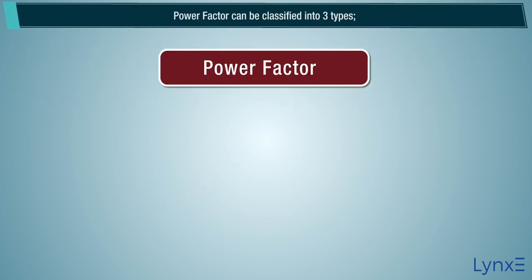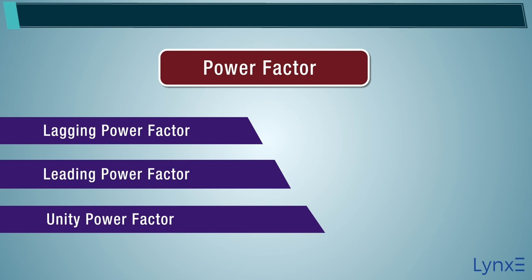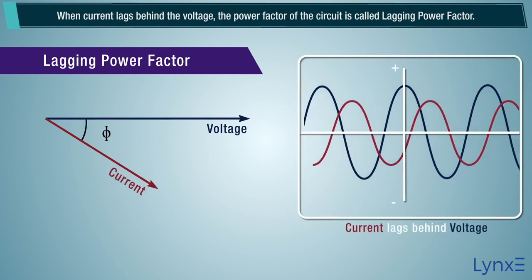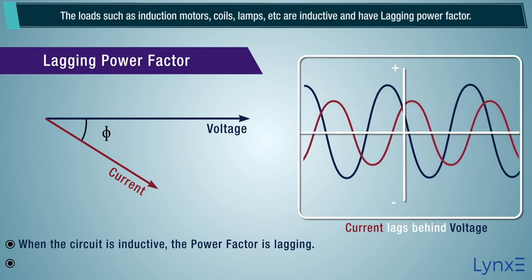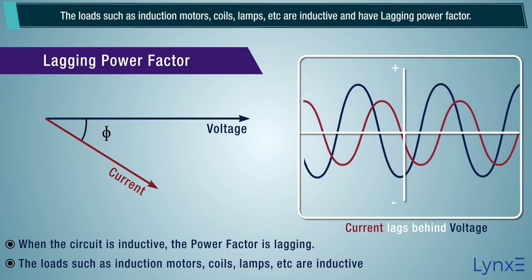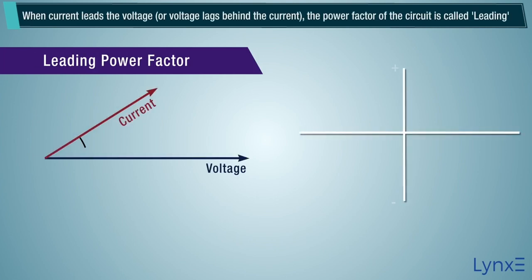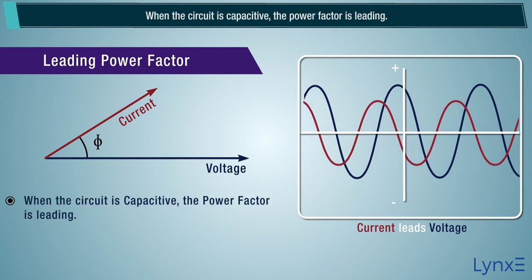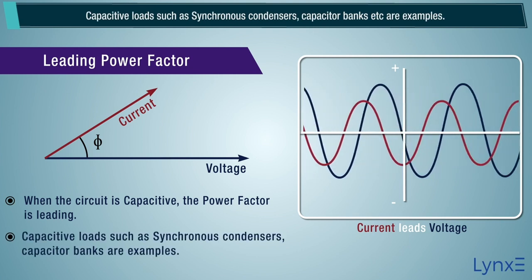Power factor can be classified into three types: lagging power factor, leading power factor, and unity power factor. Lagging power factor: when current lags behind the voltage, the power factor of the circuit is called lagging power factor. When the circuit is inductive, the power factor is lagging. Loads such as induction motors, coils, and lamps are inductive and have lagging power factor. When current leads the voltage, or voltage lags behind the current, the power factor is called leading power factor. When the circuit is capacitive, the power factor is leading. Capacitive loads such as synchronous condensers and capacitor banks are examples.